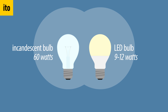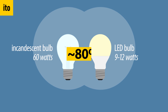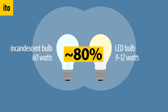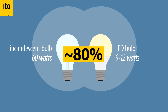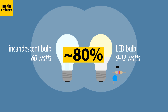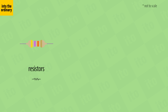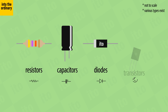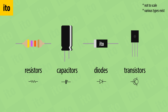We'll explain the difference between AC and DC in another video. A typical incandescent bulb could require 60 watts of power to give a useful amount of light, whereas an equally bright LED bulb uses as little as 9 to 12 watts — that's a significant difference in power consumption, about 80%. We'll explain watts, a unit of power, in a future video. To maintain those low voltages, LED bulbs contain small electronic components. Stepping down from the mains voltage requires so-called resistors, among other components such as capacitors, diodes, transistors, and other types.